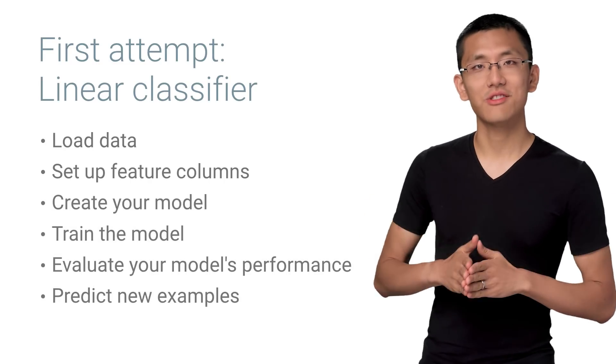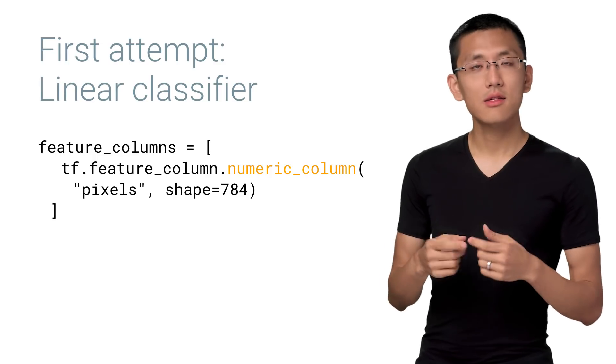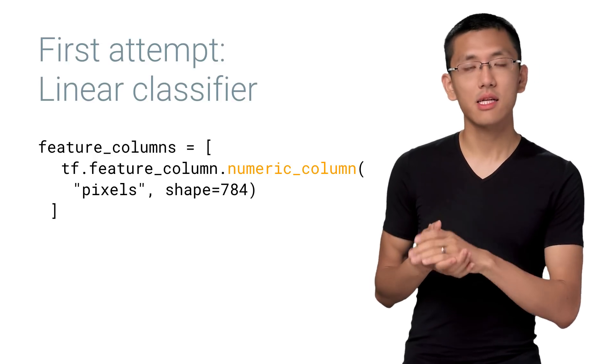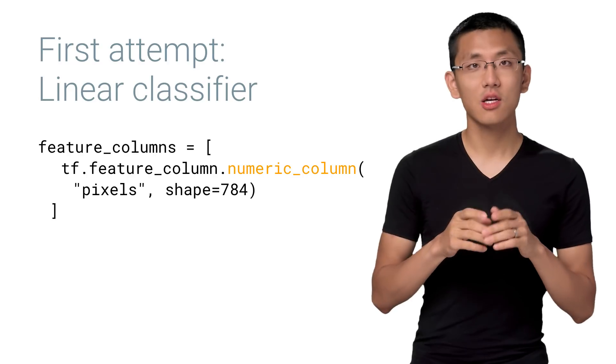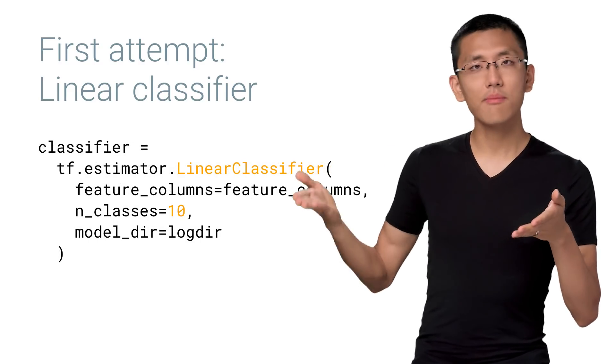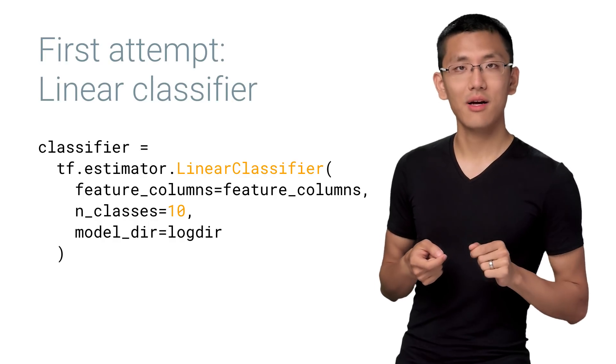We'll also make some predictions directly from our local model. Let's start by creating our model. We'll flatten the data set from being 28 by 28 to 1 by 784 pixels and make a feature column called Pixels. This is analogous to our flower features from episode 3, Plain and Simple Estimators.